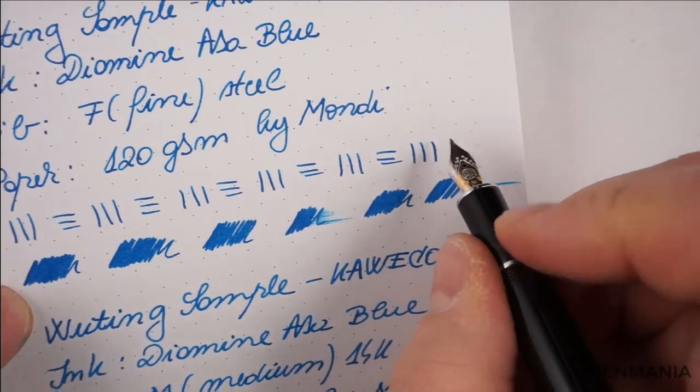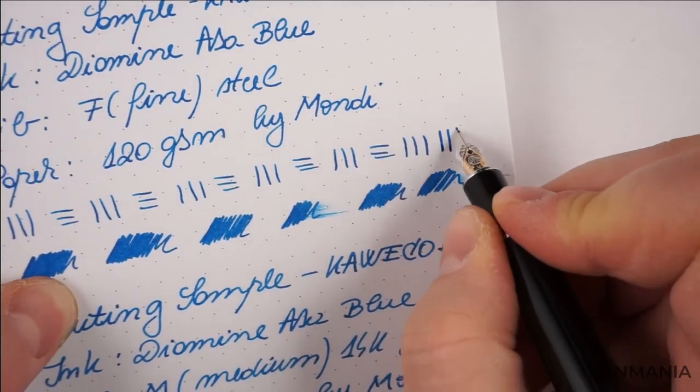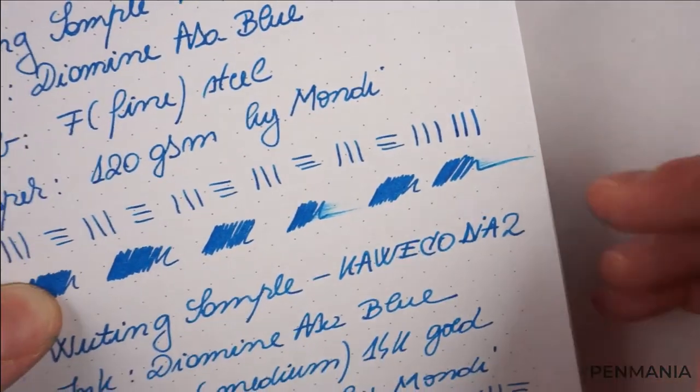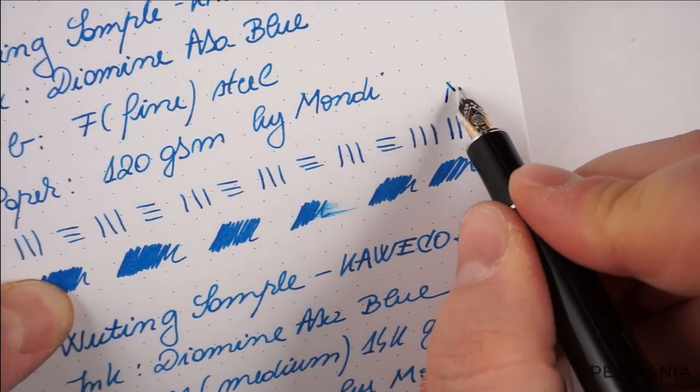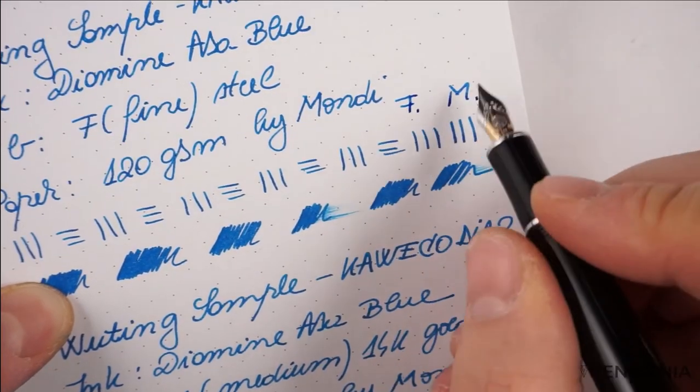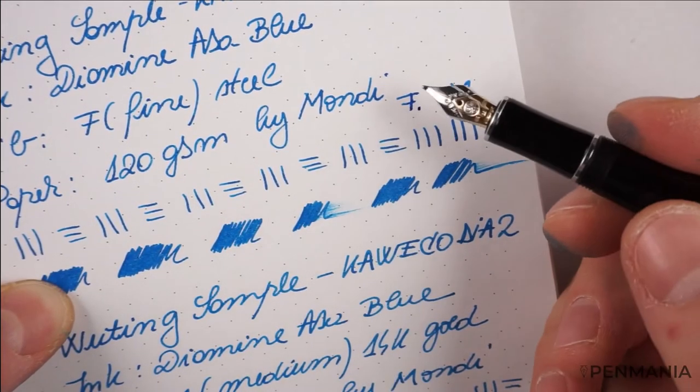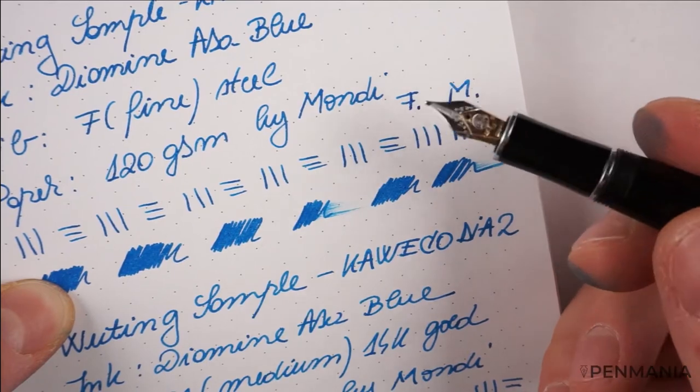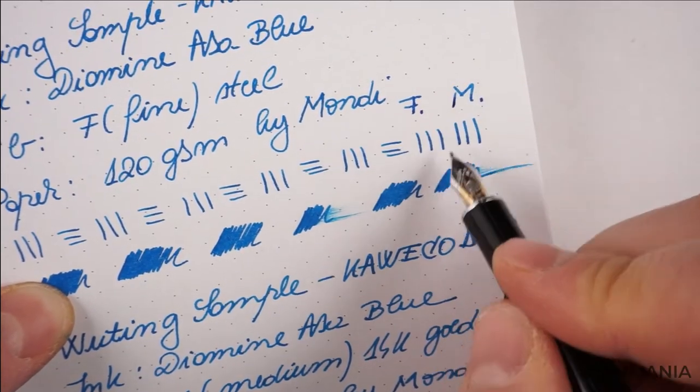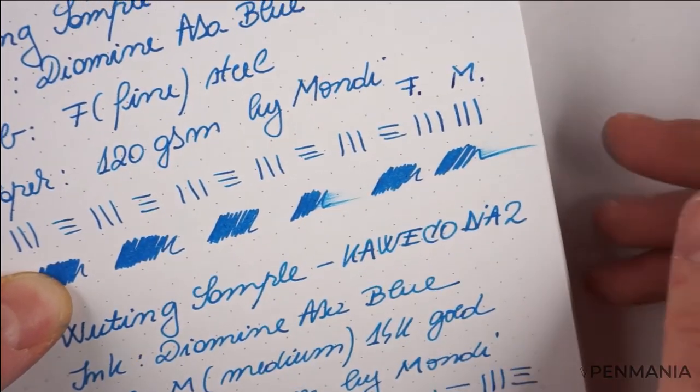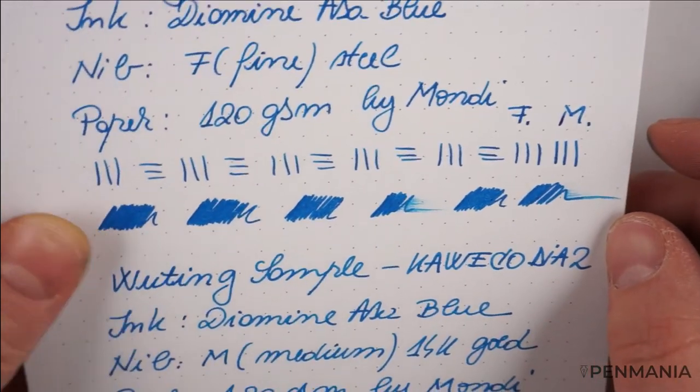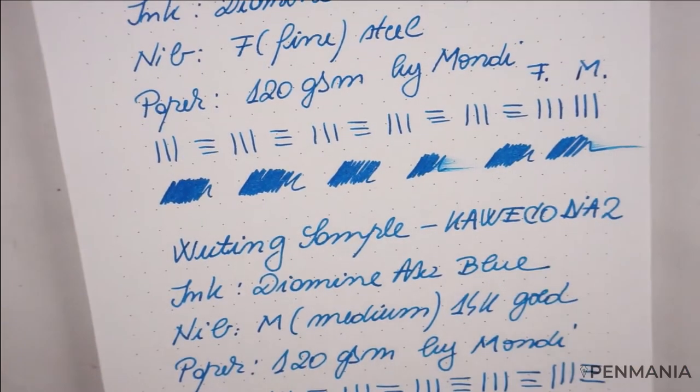So this is the fine steel nib, and here is the medium nib. I'm not pushing the nib in any way. I don't like to do that, especially because this is not a flexible nib. It is a small nib, so it doesn't make sense to push it. But again, you can see the difference between the two types of nibs.